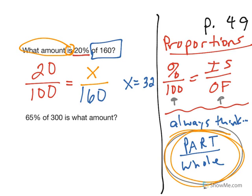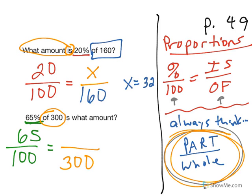So for all of these, I'm going to help you set them up and then let you solve them. In the second one, 65% over 100. Of 300 goes on the bottom. Is what number? x on the top. So 65 over 100 equals x over 300. Cross multiply, and you should come up with x is 195.